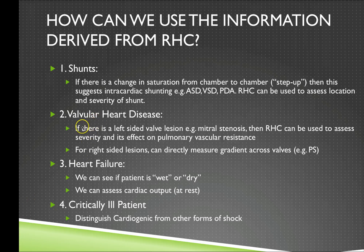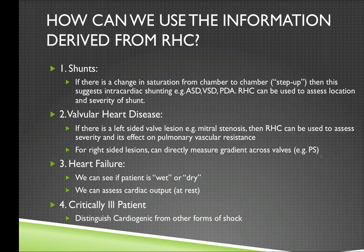Another very important role of right heart catheterization is in the estimation of valvular heart disease. For example, in a right-sided lesion like pulmonary stenosis, it's possible to measure the pressure gradient across the valve directly. For left-sided valve lesions, the classic one being mitral stenosis, we use right heart catheterization to assess severity based on back pressure through the right heart, which is essential in deciding who should be treated with surgery and the timing of surgery.